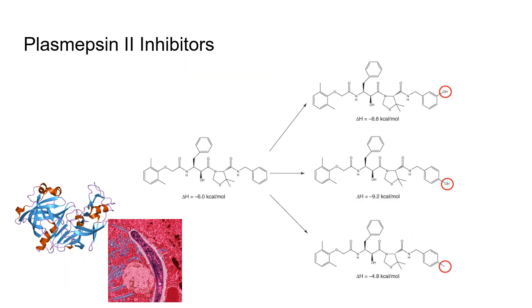Let's go over some examples of thermodynamically optimized drugs. Here we see derivatives of a plasmepsin-2 inhibitor, each with a different functional group or placement of said group from their parent. Plasmepsin-2 is an important enzyme in the metabolic pathways of the parasite Plasmodium, which causes malaria, so plasmepsin-2 inhibitors can be optimized to treat malaria. Note how hydrogen bonds better optimize delta H, while the presence of a hydrophobic methyl group increases it. The delta H values here were determined by DSC.